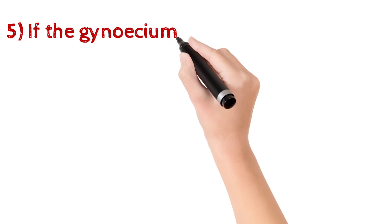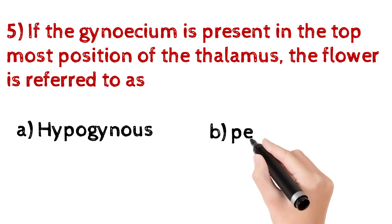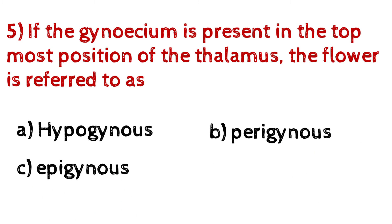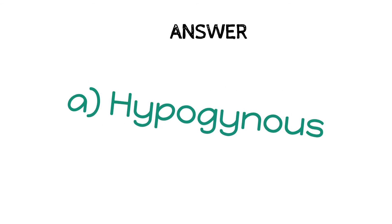Question number 5: If the gynoecium is present in the topmost position of the thalamus, the flower is referred to as A. Hypogynous, B. Perigynous, C. Epigynous, D. None of these. And the answer is A, Hypogynous.